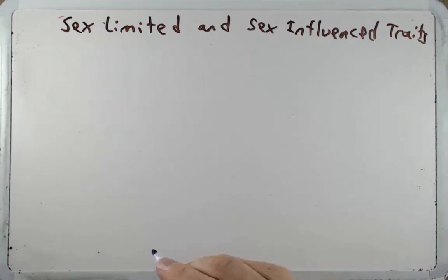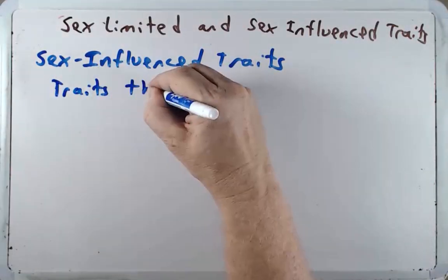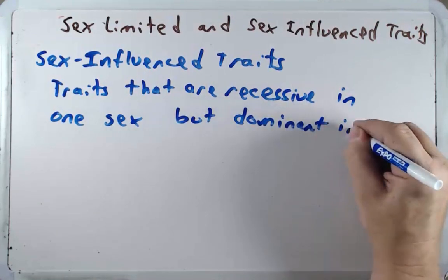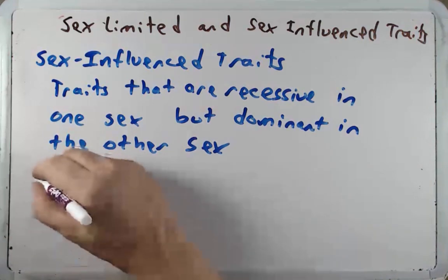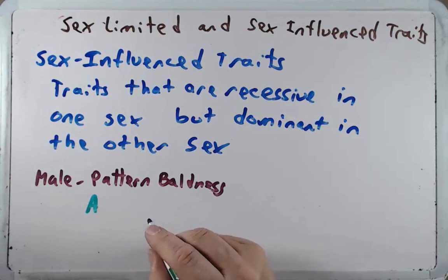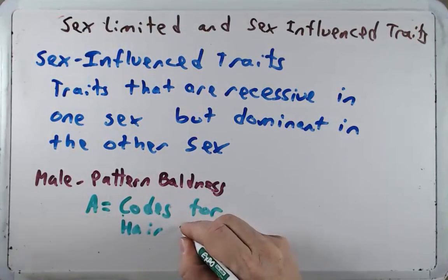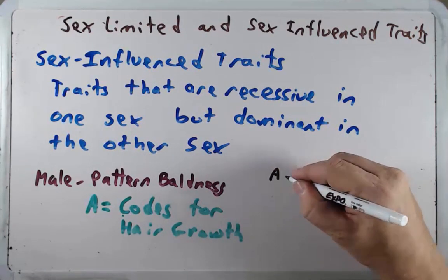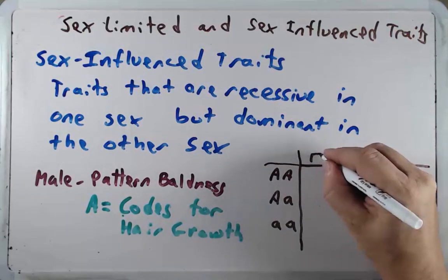Next, let's talk about sex influenced traits. These are traits that are recessive in one sex but dominant in the other sex. A classic example of a sex influenced trait is male pattern baldness. For simplicity, big A codes for hair growth. An individual could be big A big A, big A little a, or little a little a, and could be either female or male.